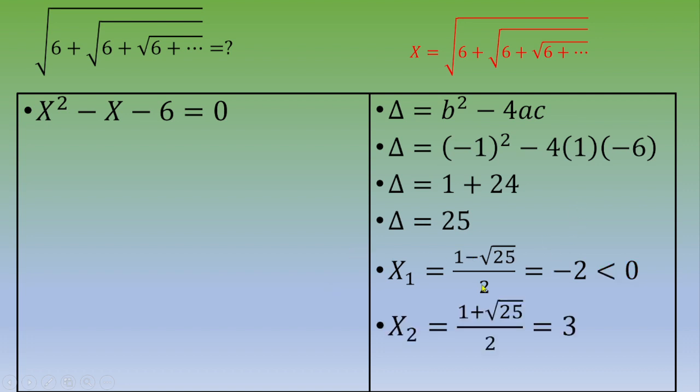The second root is 1 plus square root of 25 divided by 2. 1 plus 5 is equal to 6, and 6 divided by 2 is equal to 3. So the quantity is 3. Thanks for watching this video, and I hope to see you in the next video.